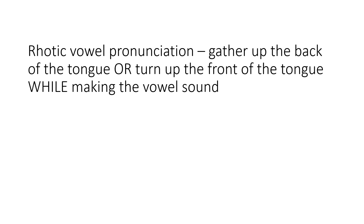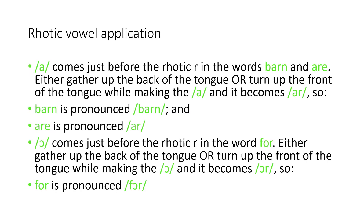Now let's create those rhotic vowels and pronounce those words like a native rhotic speaker. In the words 'barn' and 'are', we'll rhoticize the R sound because it comes just before the vowel sound in both words. So you either gather up the back of the tongue, or you turn up the front of the tongue while making the R sound, and our plain R becomes the rhotic R. So 'barn' is pronounced 'barn', and 'are' is pronounced with the rhotic R.